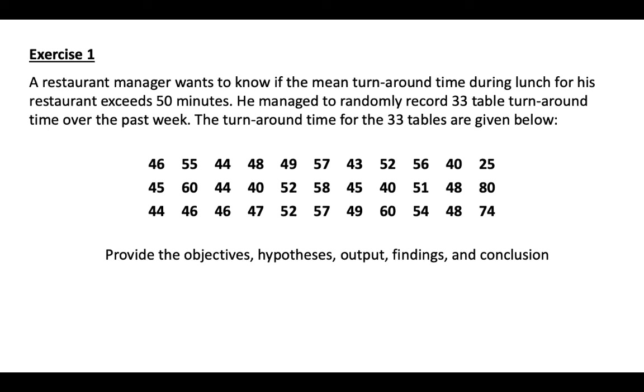So this is where you can pause and try this on your own, the exercise. This is where you pause the video, try this on your own and then you compare it to my answers. So a restaurant manager wants to know if the mean turnaround time during lunch for his restaurant exceeds 50 minutes. He managed to randomly record 33 table turnaround time over the past week. Turnaround time for the 33 tables are given below. Provide the objectives, hypothesis, outputs, findings and conclusion. This is something that you have to do. You need to practice this because probably in the exam, questions like this will come up.